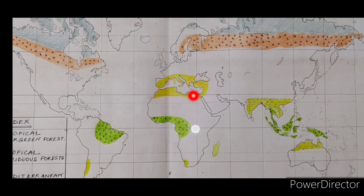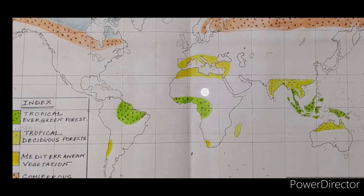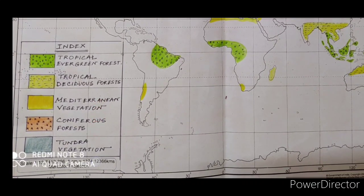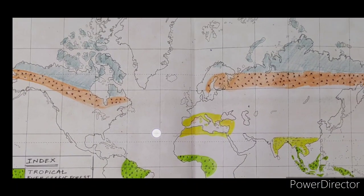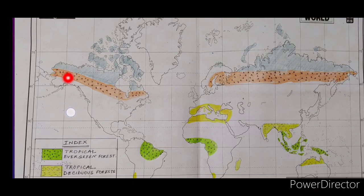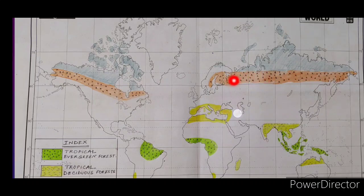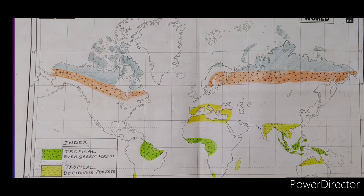Next is the coniferous forest, also called the taiga forest. It is mainly found in the northern part — in North America the entire region is covered in orange color with a cross symbol. In Europe and Asia, along the Siberian and Russian countries and the Scandinavian countries, coniferous forest is found. It is a cold region; conical-shaped trees like pines, spruce, cedar, and deodar are mainly found here.